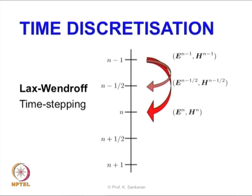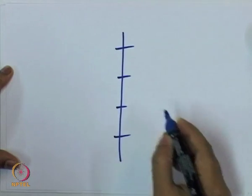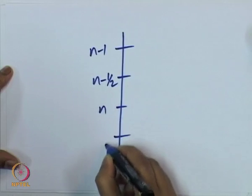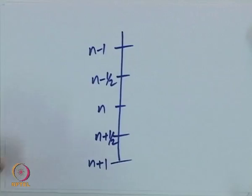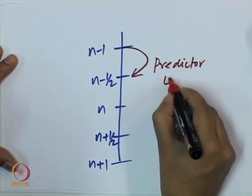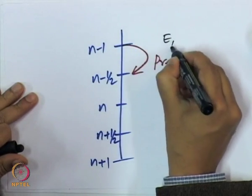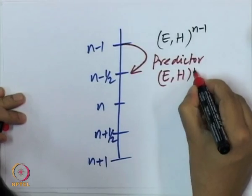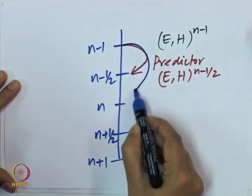The first step is called the predictor: going from time level N-1, through N-1/2, to N, to N+1/2, to N+1. I have the values of E and H at time step N-1 and I am predicting the values of E and H at N-1/2, and then use that value to improve the prediction in what is called the corrector step.